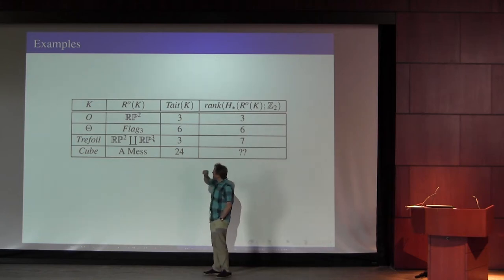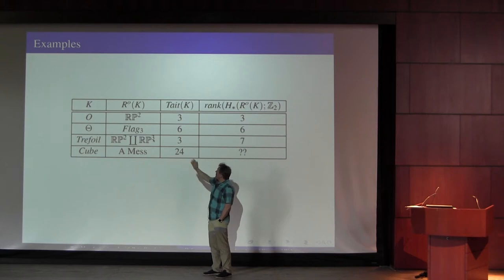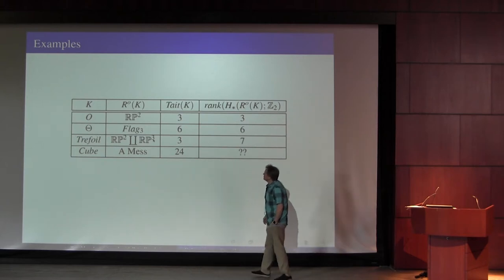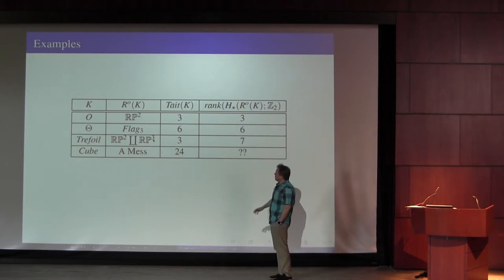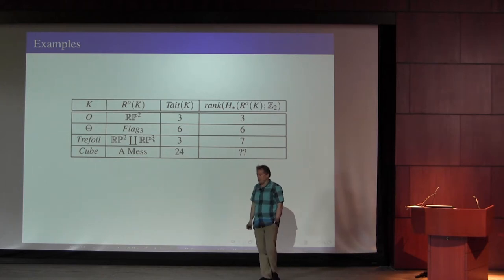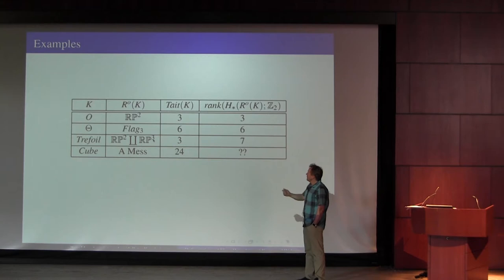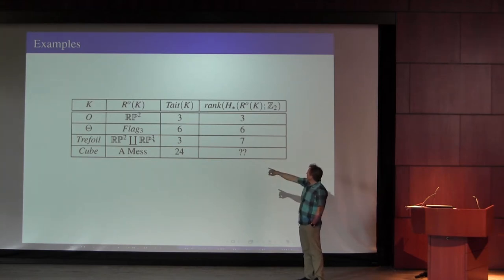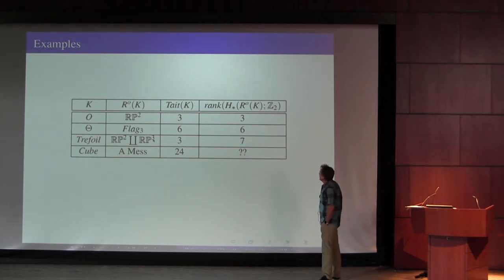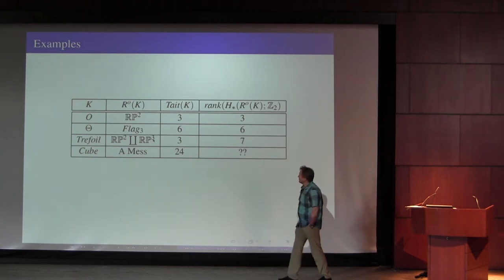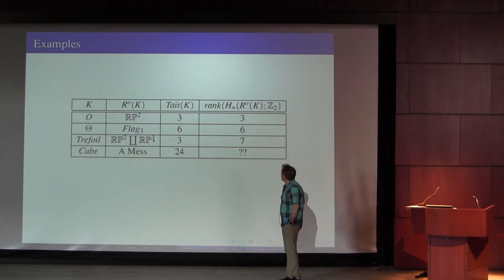If you look at the simplest example — the unknot — the representation space is a copy of RP², just elements of RP² in SO(3). That's a copy of RP². The number of Tate colorings is three, and the rank of the homology — the microhomology over Z₂ coefficients — is three. For the theta graph, the representation variety: I get for each of the three edges an element of order two such that the product is the identity. That's just the diagonal matrices, so that's a copy of the flag manifold.